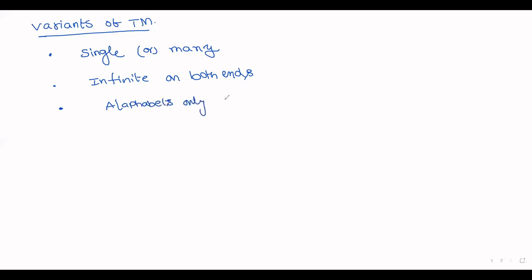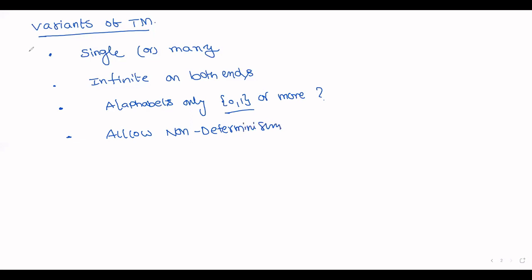Another variation is alphabets only — that is {0, 1} or more. A Turing machine can accept only the alphabets zero and one, or there is a chance to accept more number of alphabets. And it is also possible to allow non-determinism — that is a non-deterministic Turing machine. These are the different variations.